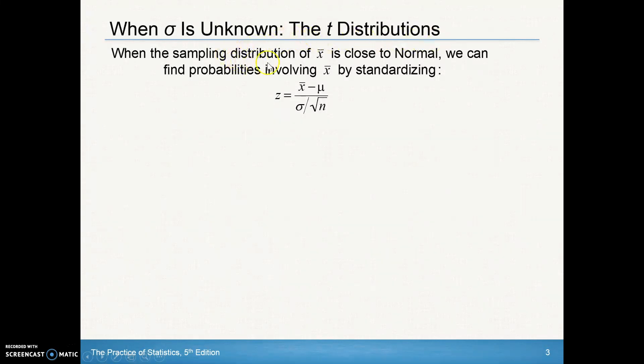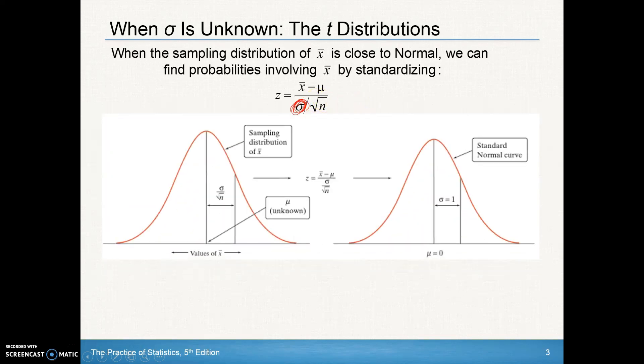As a review, when we have sampling distributions of x bar, when it's close to normal, we can find probabilities of x bar by standardizing. This is our standard z-score formula of our observation minus the population mean divided by our standard deviation. Our standard deviation is the sigma divided by the square root of n. If you take these values and we standardize them, it should be standardized so we have a mean of zero and a standard deviation of one. That's how we know when we have a standard normal curve.